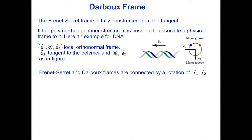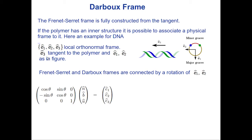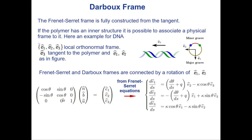The Frenet-Serret and Darboux frames are connected by a rotation of e1 and e2 around the e3 axis by an angle θ(s). This rotation can be written as a matrix multiplication that brings n and b to e1 and e2, with θ depending on position s along the curve.